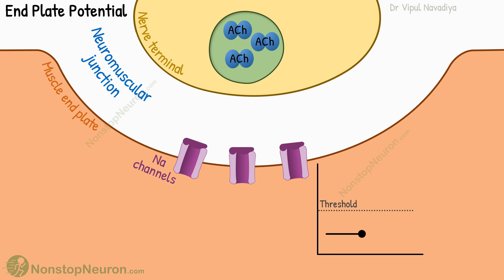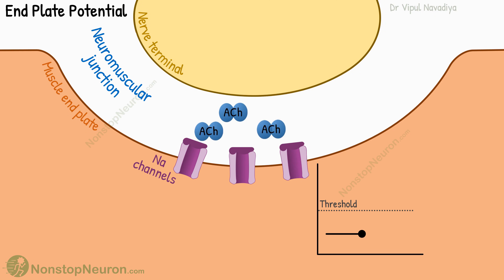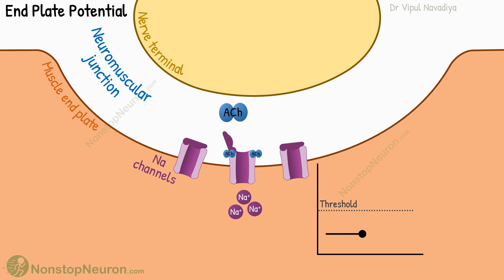In neuromuscular transmission, an impulse at the nerve terminal causes the release of acetylcholine. This acetylcholine opens sodium channels on the muscle endplate. The resultant entry of sodium rises the potential. This local potential change at the muscle endplate is called endplate potential.